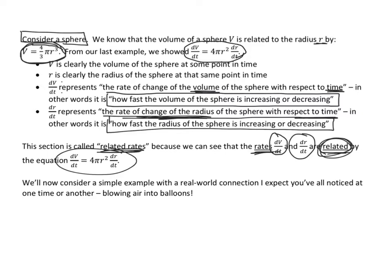This lesson is called related rates because we can see that the rates dV/dt and dr/dt are related by this equation — there is a relationship between them. If the volume is growing really fast, then the radius is probably growing quickly as well. This lesson is about finding that relationship. A really simple and real-world example of this is blowing air into a balloon.